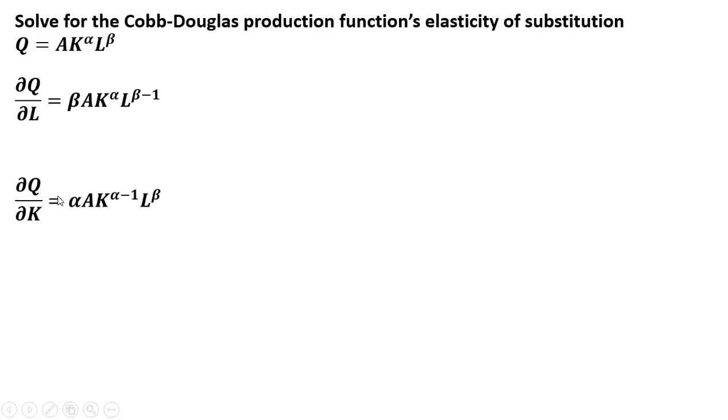The marginal product of capital, we bring this alpha down in front here from the exponent on K. We subtract 1 from that exponent on K, and we get this result.